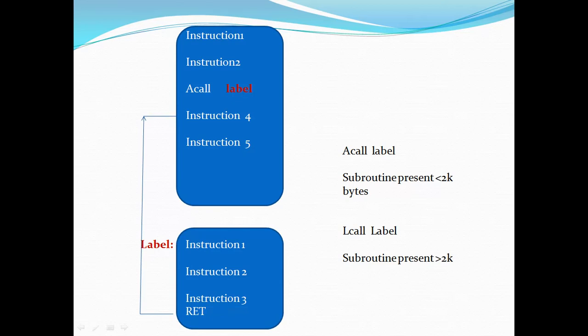When the compiler finds the call instruction, which is mentioned through labels, it leaves the current memory location and jumps to execute instruction 1, instruction 2, instruction 3 of the subroutine. These instructions are the ones repeatedly used in the main program. You can call the subroutine as many times as required — it is not a one-time execution. However many times you use the call instruction, that many times your subroutine will execute.